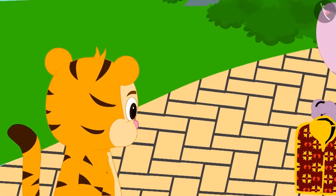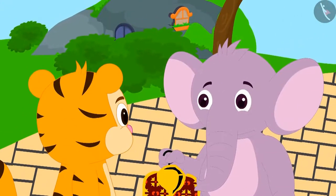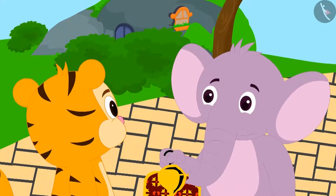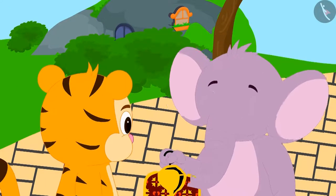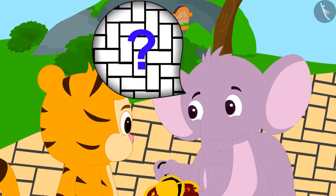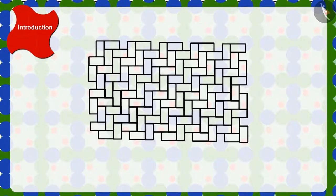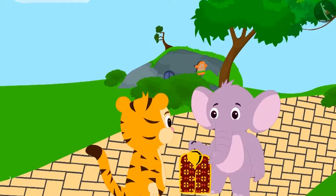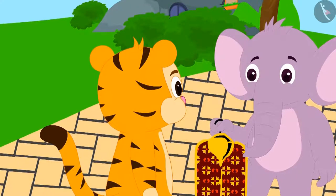Appu started thinking how this pattern would have been made. Just then, Sher Khan was passing by on his way to his house. Appu asked Sher Khan if he could tell him how this pattern would have been made. Children, can you tell how these patterns on the floor are made? Come, let's learn it from Sher Khan.